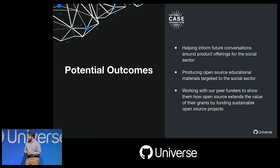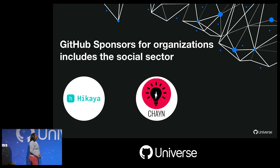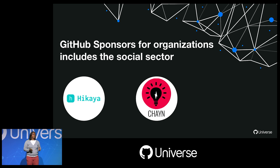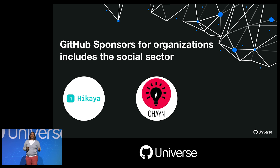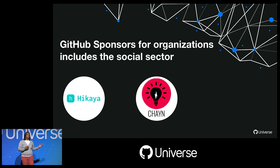As you heard in the keynote today, funding is a huge challenge and a core sustainability issue for open source. I'm very excited to announce on behalf of the social impact team that GitHub Sponsors also includes the social sector. Both organizations you heard about today — Hikaya and Chain — are part of the first cohort of organizations available through GitHub Sponsors.